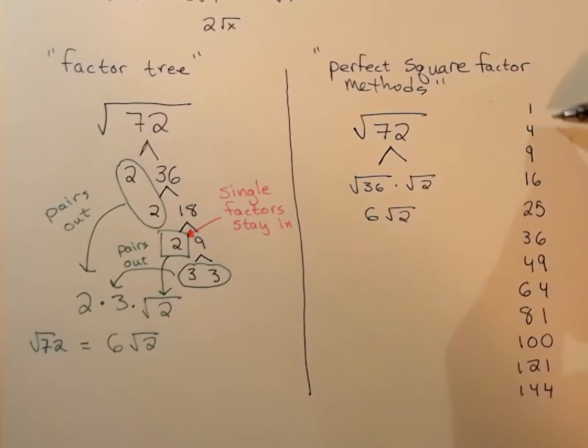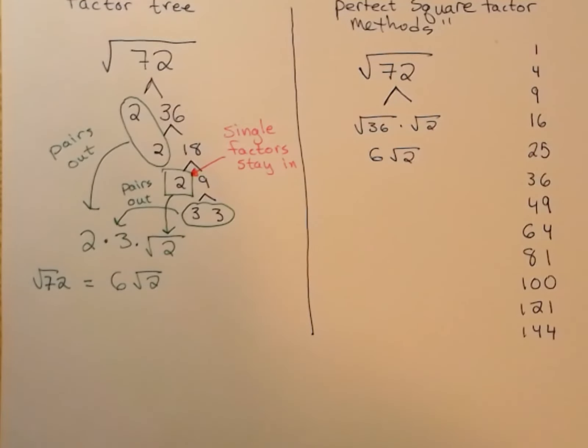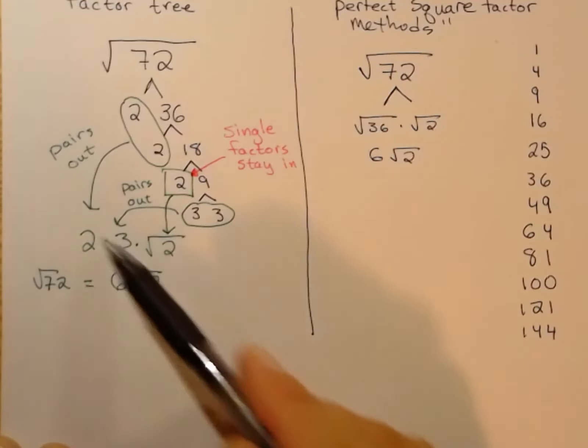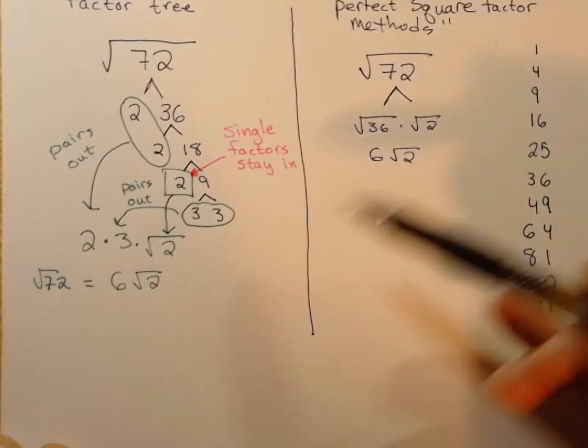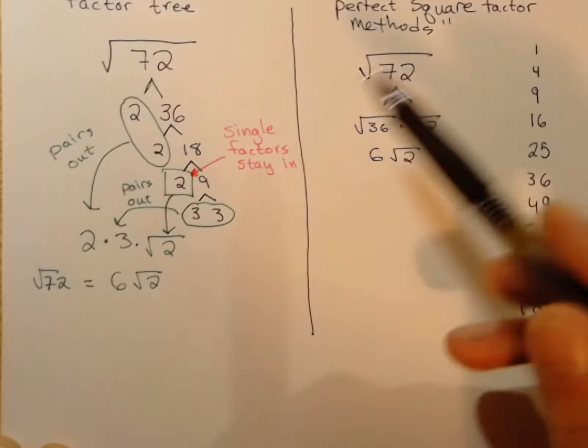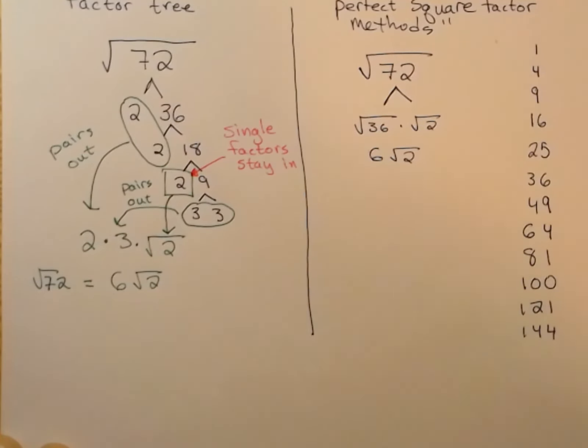So this method is quicker, but it involves you knowing all of the perfect squares, being more comfortable with them, and recognizing large numbers as having any of these perfect squares as their factors. You can do this method more than once, either method, by the way. When you break down numbers into their prime factors, it usually only needs to be done once. Sometimes with this method you have to do a couple of iterations if you don't recognize the largest factor straight away.